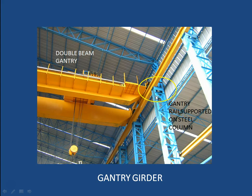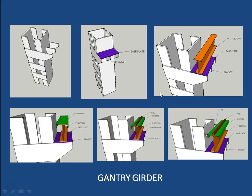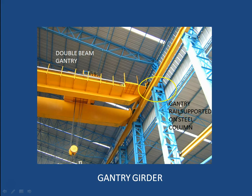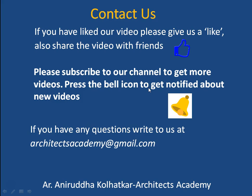The second type of arrangement shows the gantry girder kept directly on top of a part of the stanchion. You can actually see this in a photograph where one part of the stanchion continues straight up to the roof while the other part stops at the gantry girder. This makes clear what a gantry girder is, how it is used, and the details of how it is mounted on stanchions.